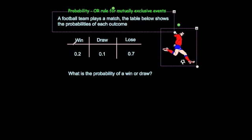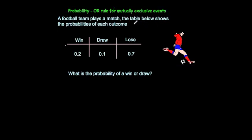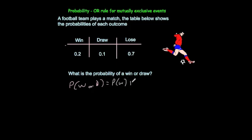Let's have a look at another example. A football team plays a match and the table below shows the probability of each outcome: the chance of winning is 0.2, a draw is 0.1, and a loss is 0.7. What's the probability of a win or a draw? The probability of a win or a draw equals the probability of a win plus the probability of a draw, which is 0.2 plus 0.1, giving 0.3.